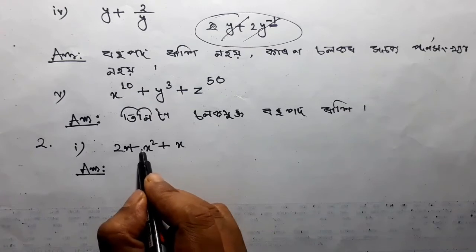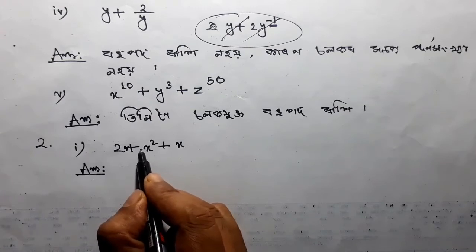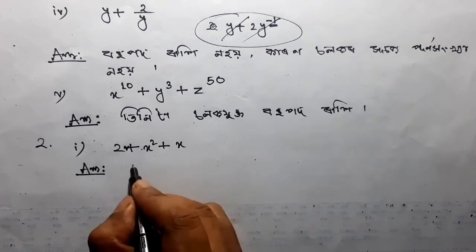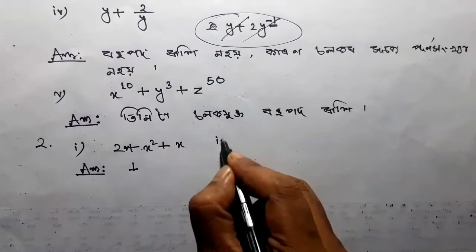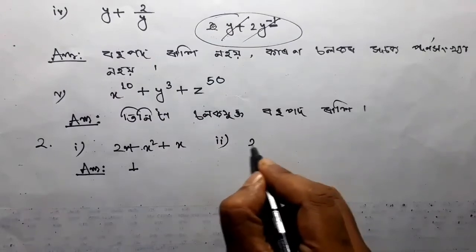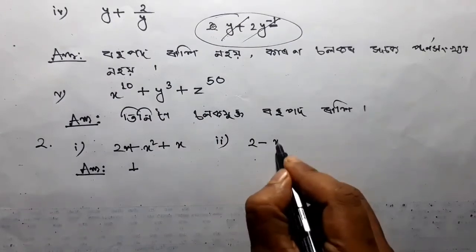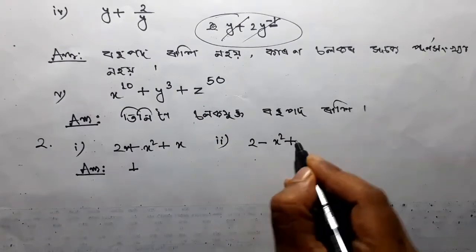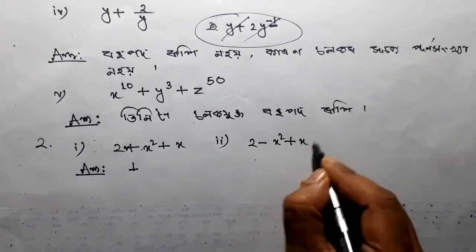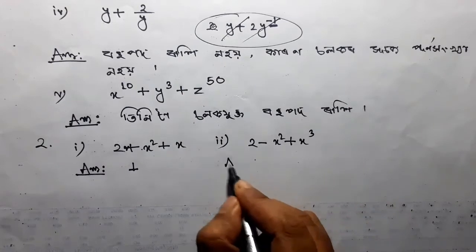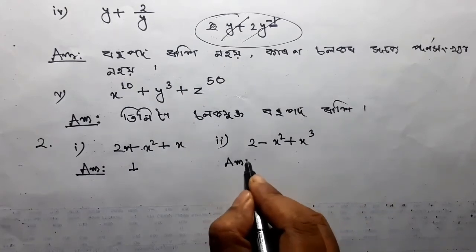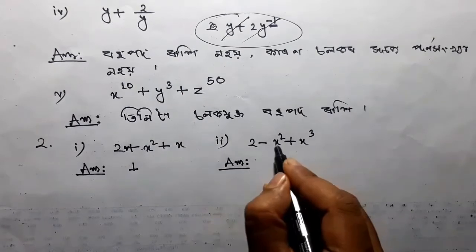Directly write x squared. Hog means x squared. So hog to 1 is 1. 2 minus x squared plus x cube.